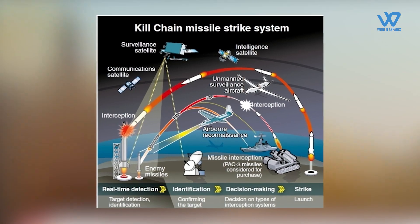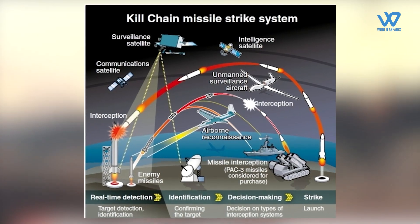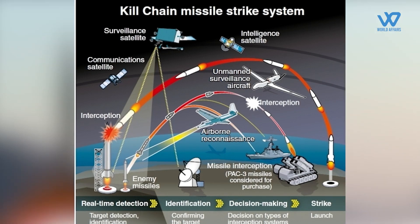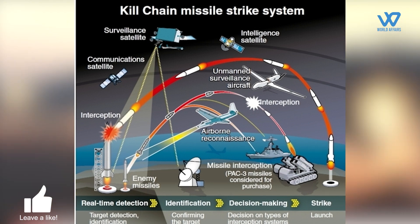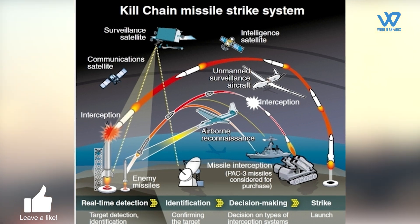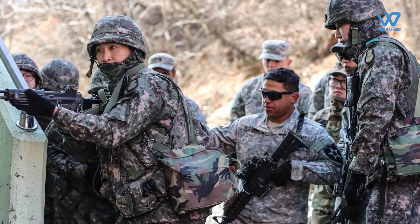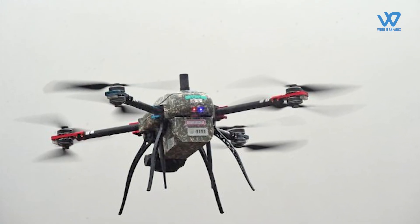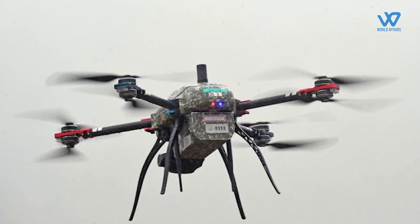South Korea already has a pre-emptive attack system in place called Kill Chain, which is designed to carry out contingency operations in a linear, sequential way. The Kill Chain system involves a series of stages including target identification, target tracking, target prioritization, decision making, and the execution of an attack. It relies on advanced intelligence gathering and analysis, as well as real-time communication and coordination between military assets to carry out effective and efficient operations.